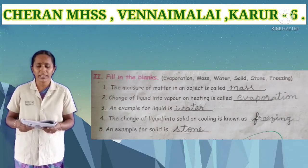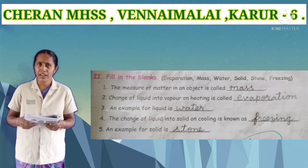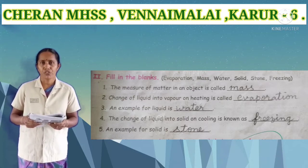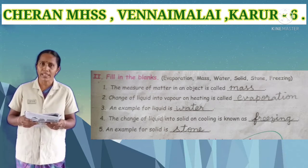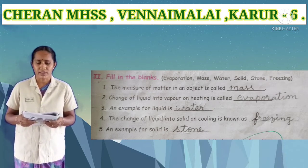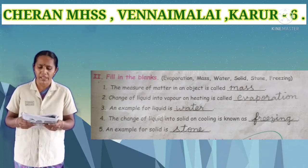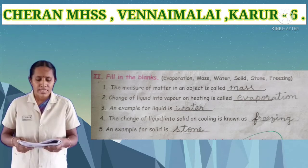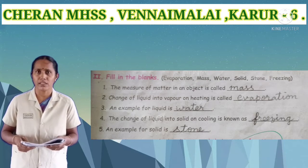Third Roman numeral: fill in the blanks. Options are: evaporation, mass, water, solid, stone, freezing. First one: the measure of matter in an object is called blank. Answer: mass. Second one: change of liquid into vapour by heating is called blank. Answer: evaporation. Third one: an example for liquid is blank. Answer: water.